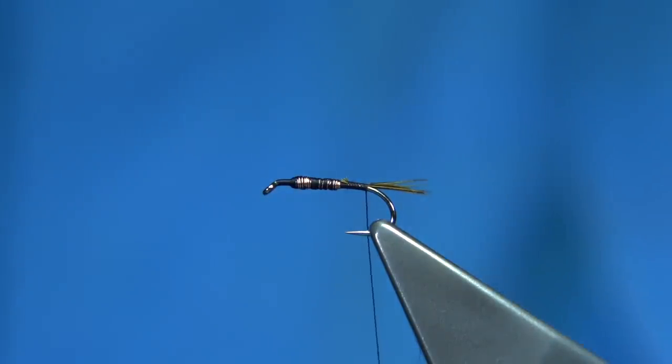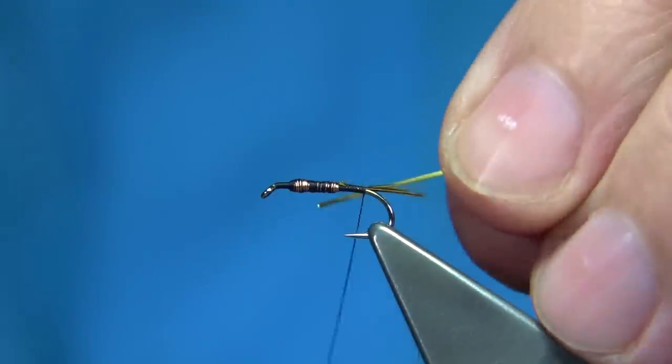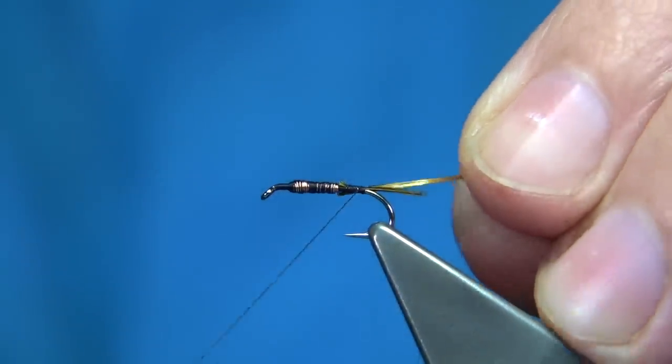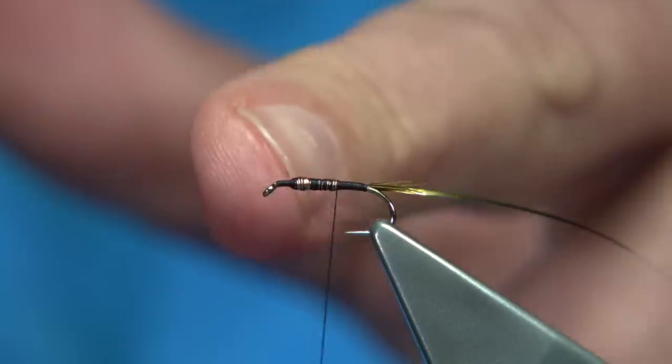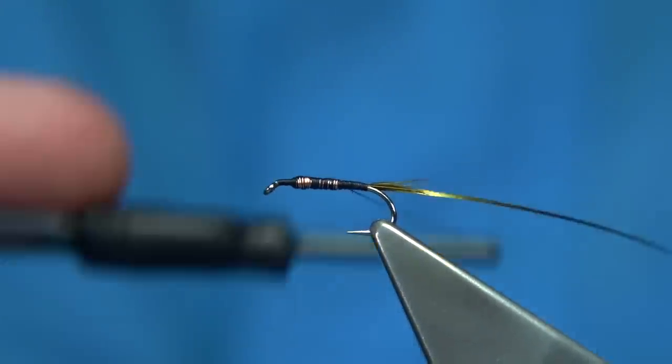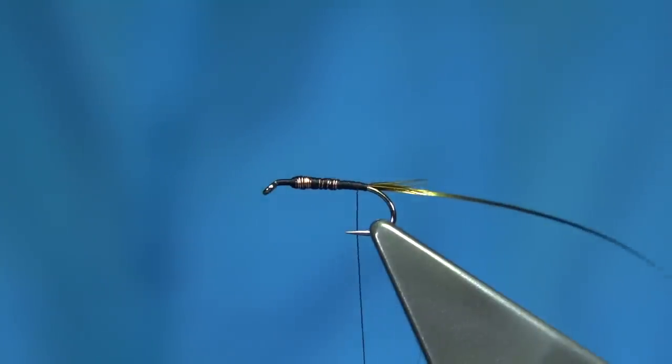Then I'm going to tie in, this is just a small gold tinsel. Take the thread back up to the point where I stopped the copper wire, see how the taper is there. Then bring the thread back down, ready for tying in the dubbing.